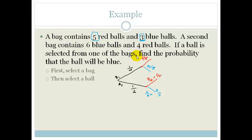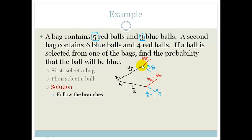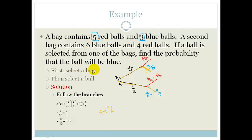There are two ways that we can pull out a blue ball — we can either go this way or this way. To find the probability of getting a blue ball we need to include both options by following the branches. The probability going branch one is one half times three eighths, plus the probability going branch two which is one half times three fifths. This gives three over sixteen plus three over ten, which equals thirty-nine over eighty, or 0.49 — approximately a 49% chance of pulling out a blue ball.